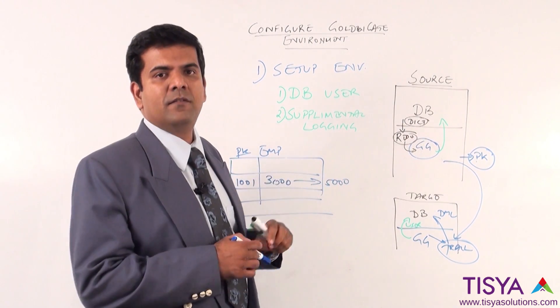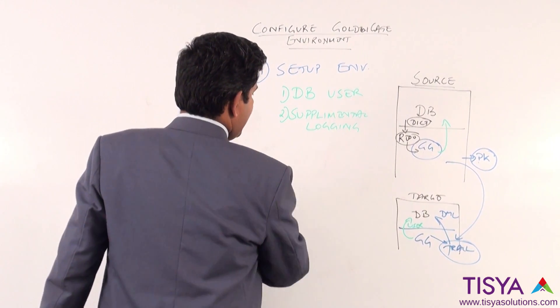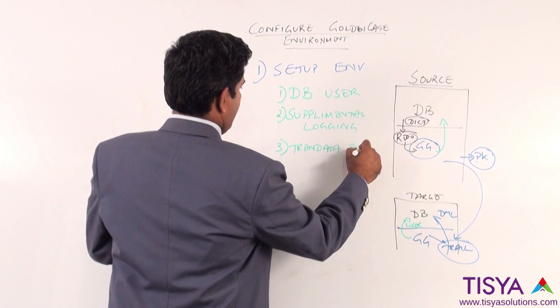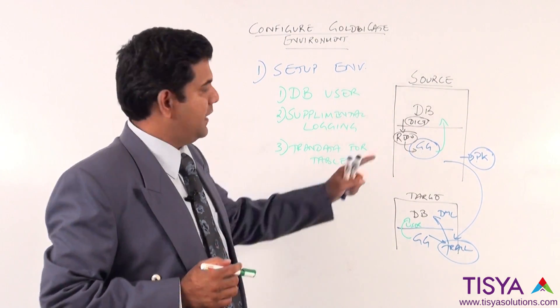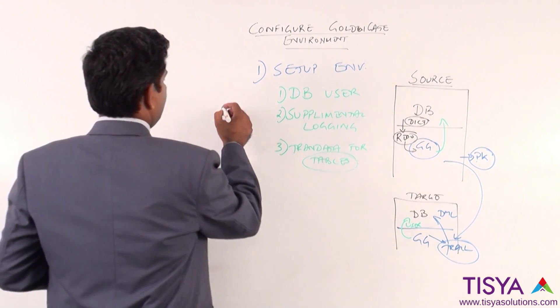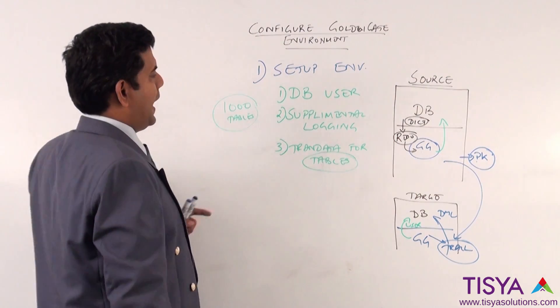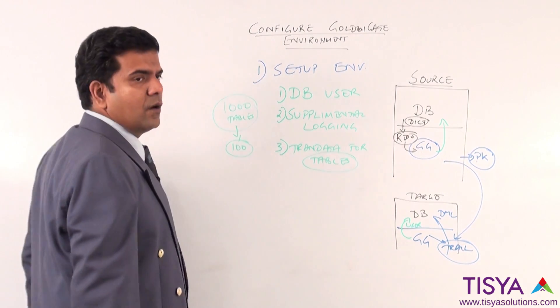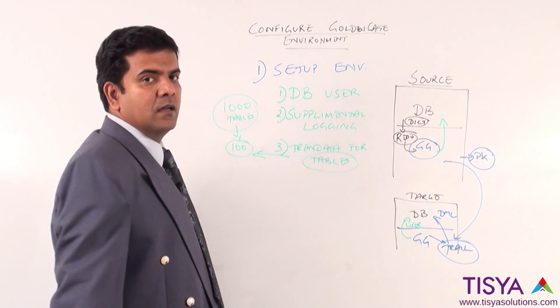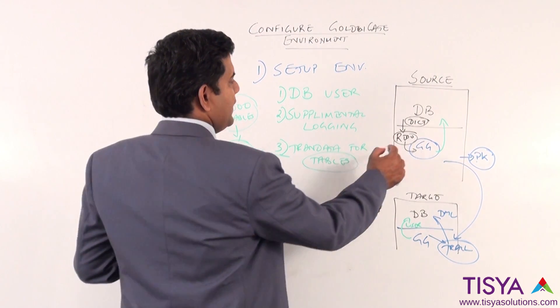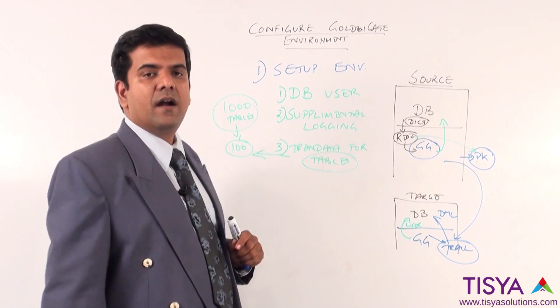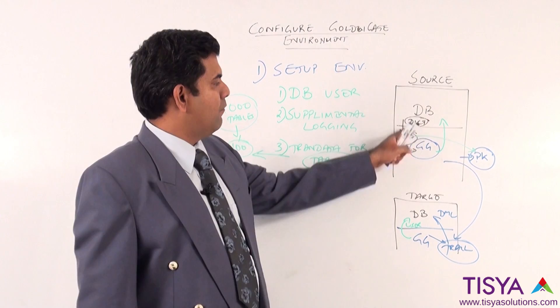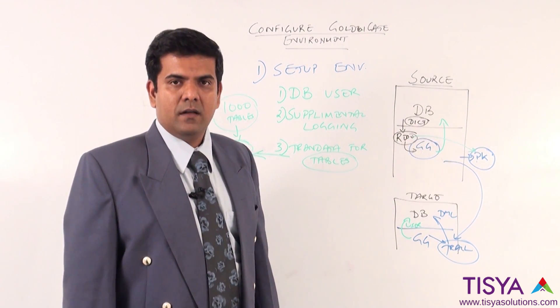Immediately next, you would enable tran data for the tables that are involved in the replication process. Please remember, I might have for example, 1000 tables as part of my application inside the source database. But maybe I am not interested in sending across everything. Maybe only 100 tables out of these 1000 need to be replicated to the target. Then using golden gate command, you will add tran data for these 100 tables so that the redo log has this information about the primary key to be logged for these 100 tables. So, whenever they are manipulated, the redo log will also have the primary key information logged in the redo log files.